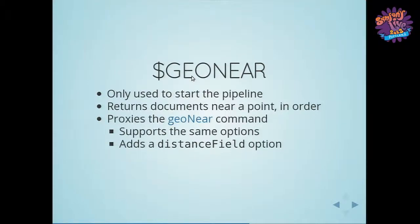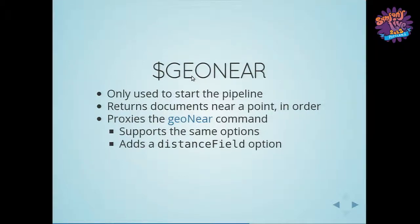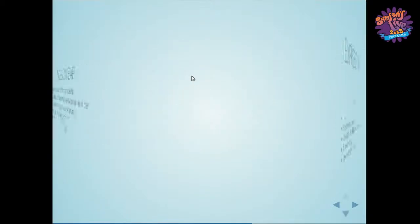GeoNear is new and I'm not going to go through examples because our books don't have any geospatial points in them. It's only useful at the start of the pipeline because it proxies to the existing Mongo command that does geospatial queries. It returns documents in the order of closeness or proximity to whatever point you're querying by, and that starts off your pipeline instead of a normal query or all the documents in the collection. It has the same options as the GeoNear database command with one addition.